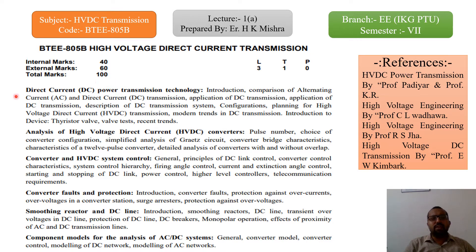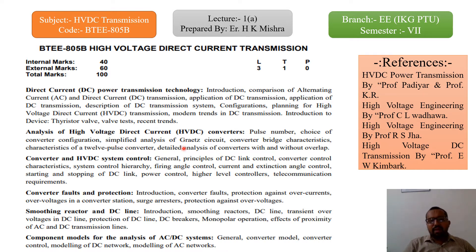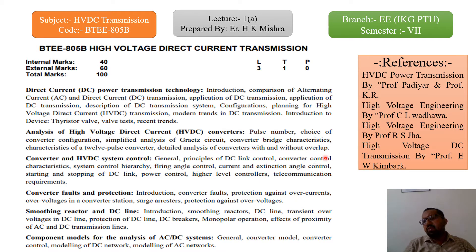Then we go to the second unit: Analysis of High Voltage Direct Current Converters. Here we discuss different types of converters designed using semiconductor devices, including simplified analysis of grid circuits, converter bridge characteristics, characteristics of 12-pulse converters, and detailed analysis of converters with and without overlapping.